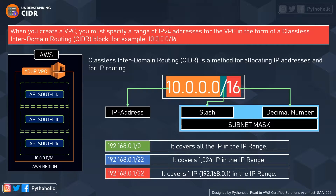When we create a VPC, we must specify a range of IPv4 addresses in the form of a CIDR block — that is, our Classless Inter-Domain Routing block — to tell AWS which block of network addresses we need. Within that block, we will divide it into smaller parts. CIDR is a method for allocating IP addresses and for IP routing.